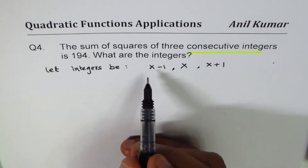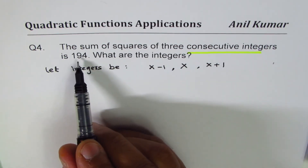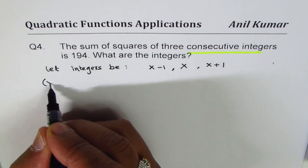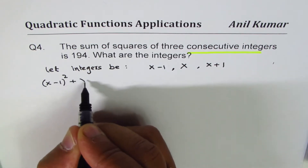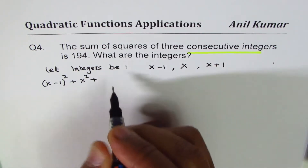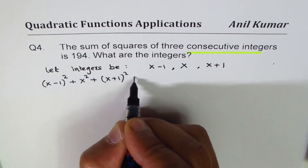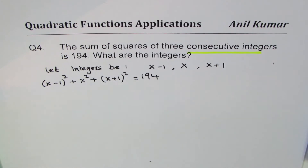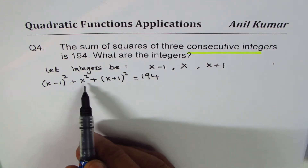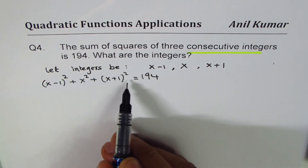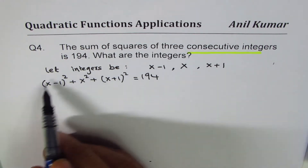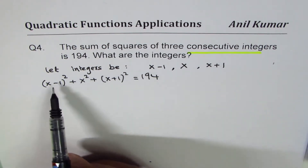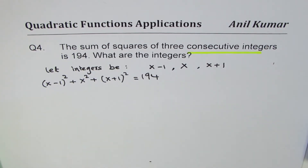The question asks for the sum of squares of three consecutive integers. We have to square them, add them, and that should equal 194. So: (x minus 1) squared plus x squared plus (x plus 1) squared equals 194. That is how you get your equation — the sum of squares of three consecutive integers is 194. Now let's expand this.